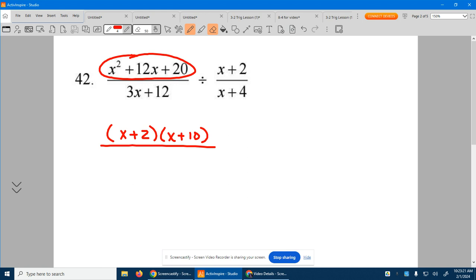Down in the bottom, 3 and 12 both have a 3 that can factor out, and that will leave x plus 4, because 3 times x is 3x, and 3 times 4 is 12.